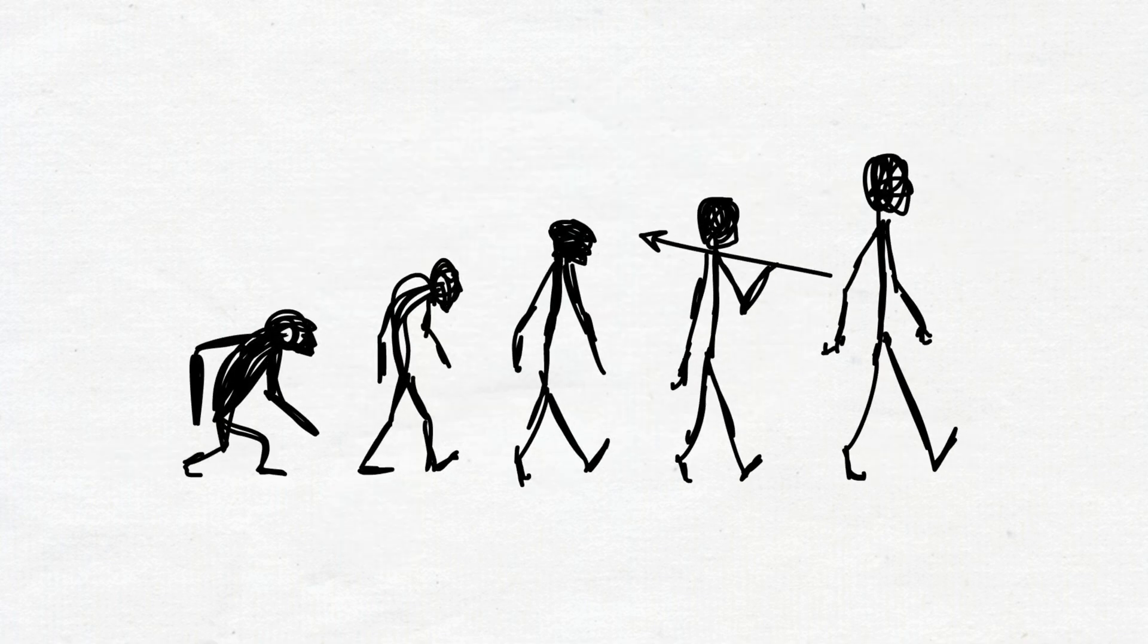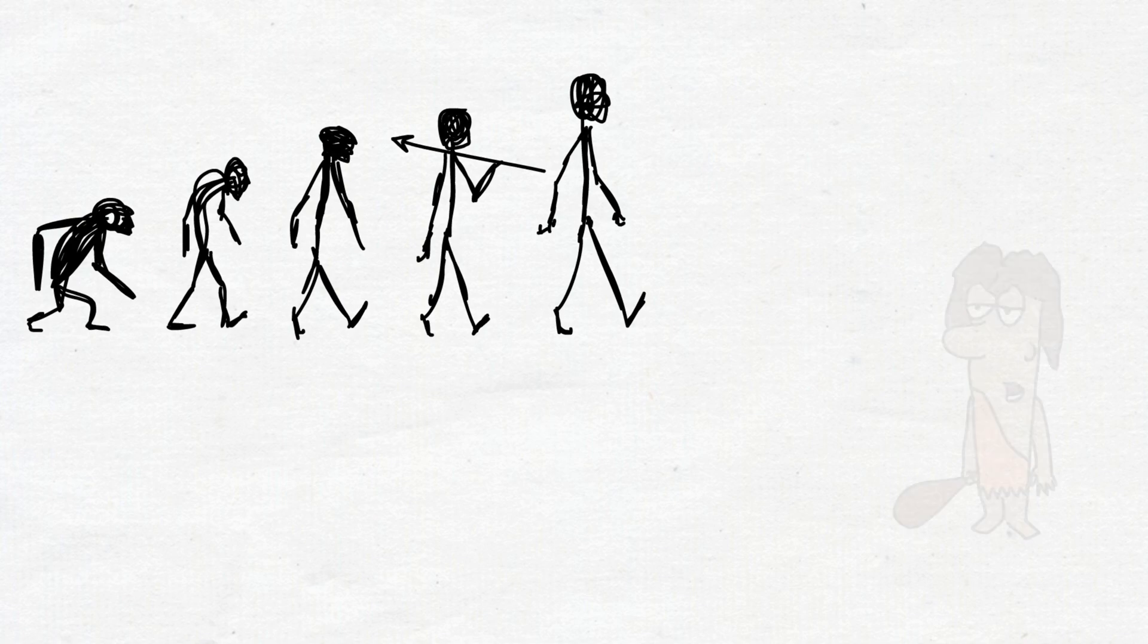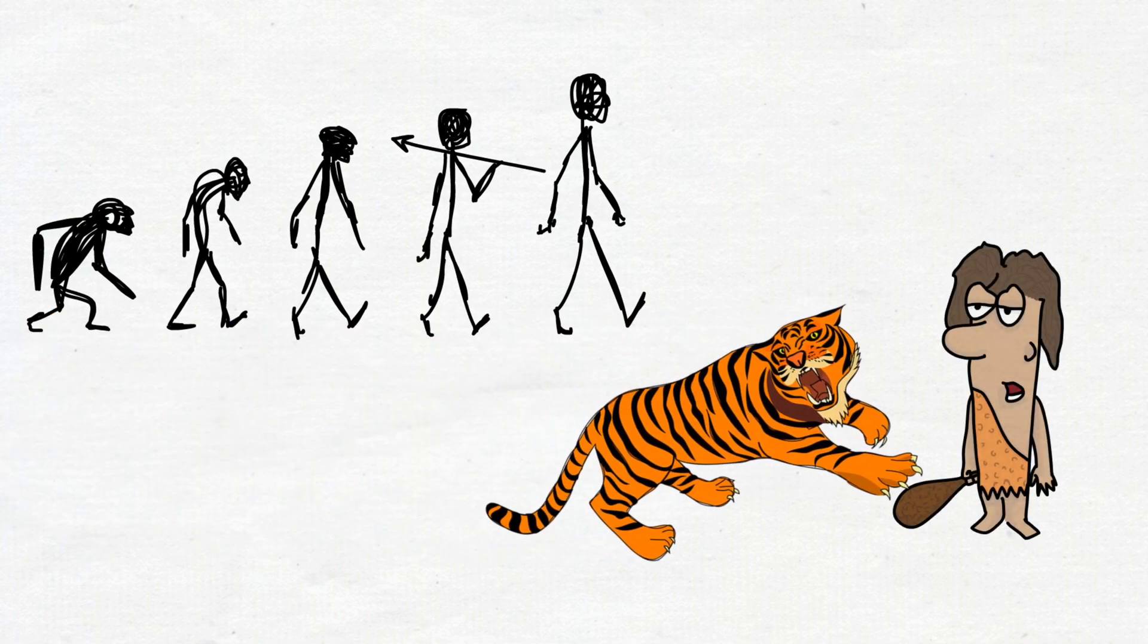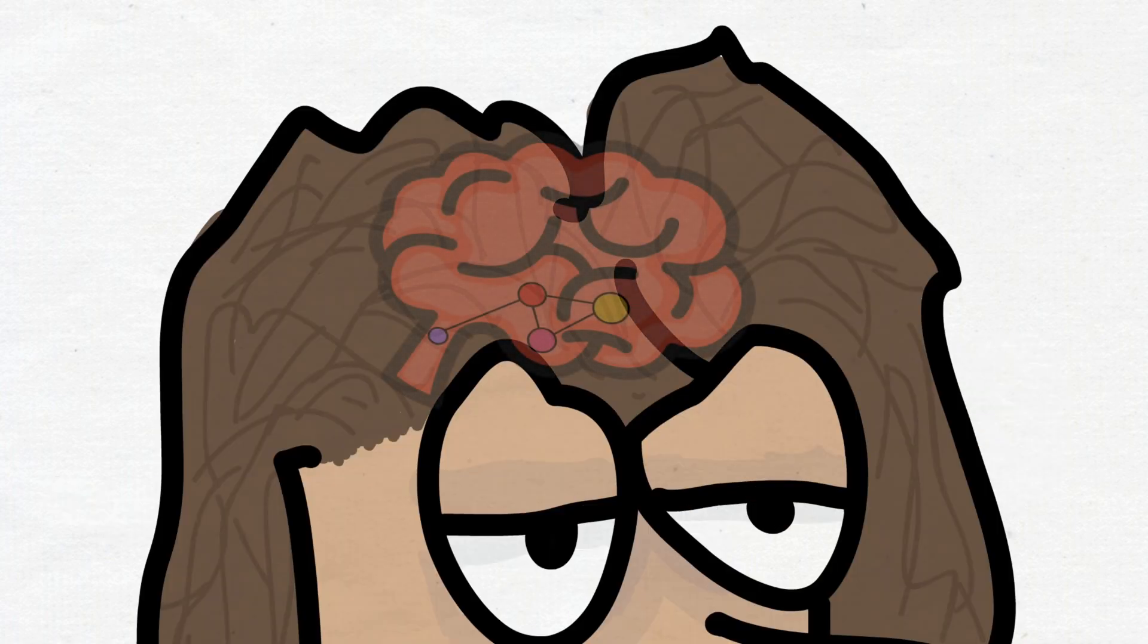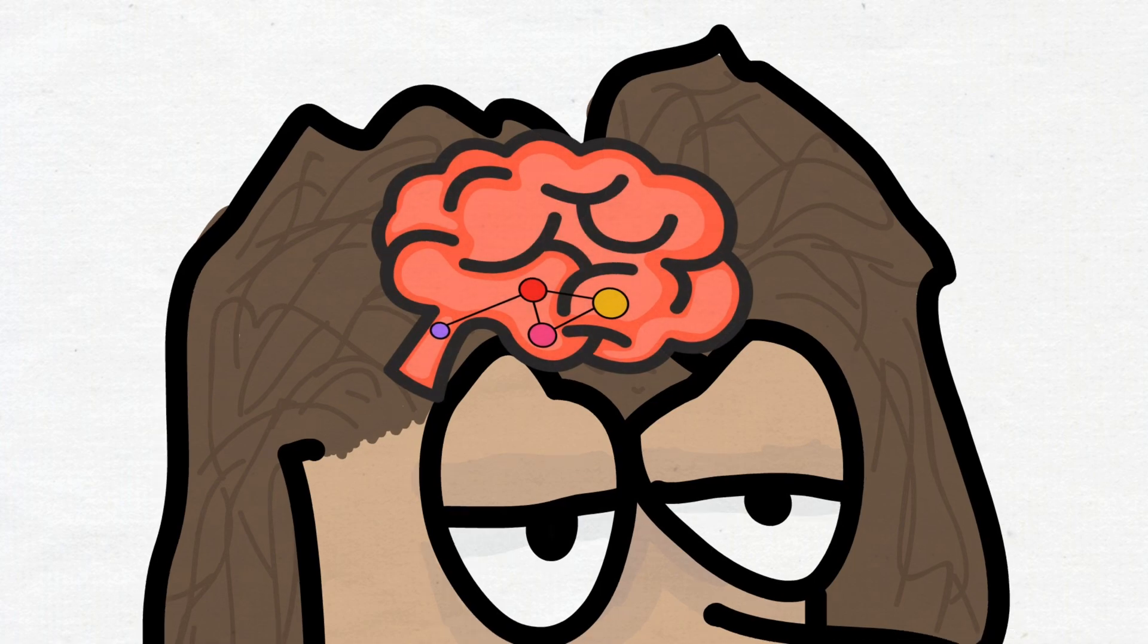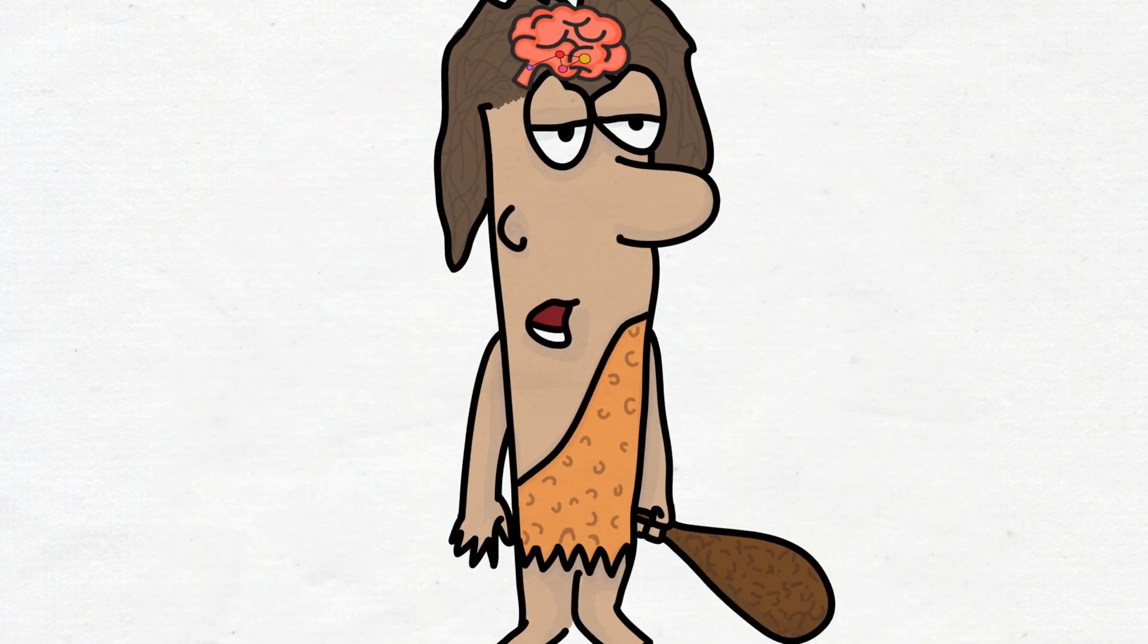For millions of years, our ancestors lived in danger of being attacked by bigger, faster, and stronger predators. For them, the reality was: stop to think, and you're lunch. So evolution put that fast and automatic defense circuitry into their brains, and into our brains.